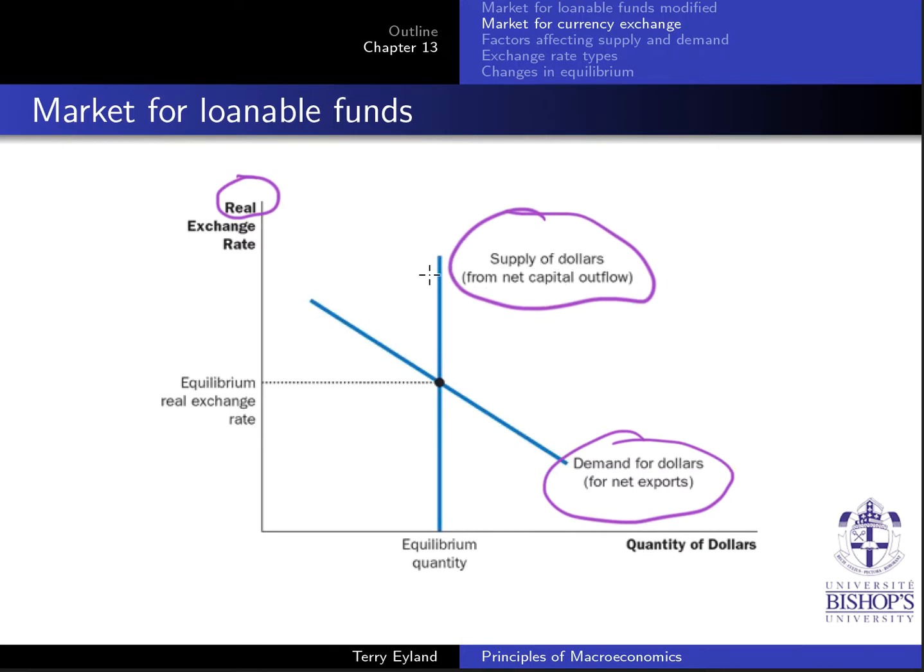But essentially, what they're saying is that the supply of dollars from net capital outflow does not change. When you have a vertical line, it's for any of these things on the vertical axis, you have the same amount. So what it means is it's completely independent. So the supply of dollars is independent of the real exchange rate, is what they're saying, because the supply of dollars depends on that relationship between R and Rw.